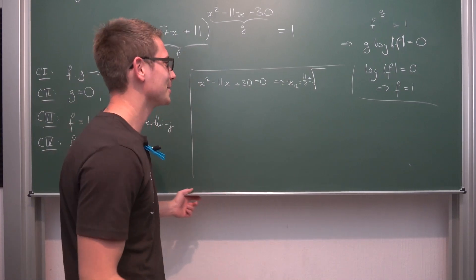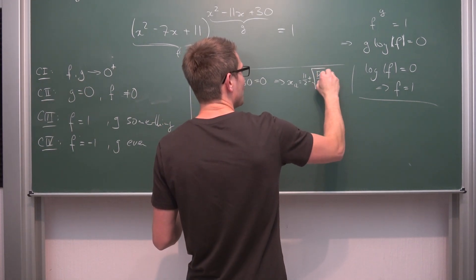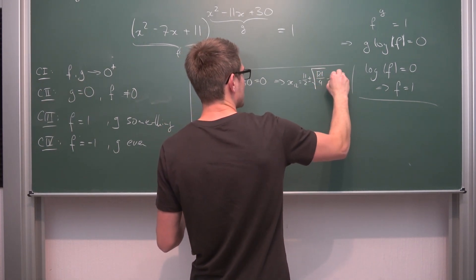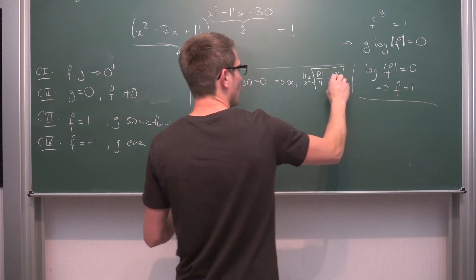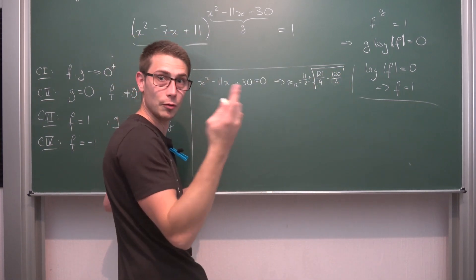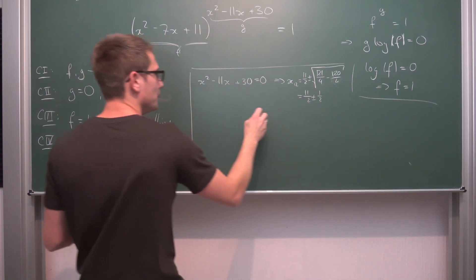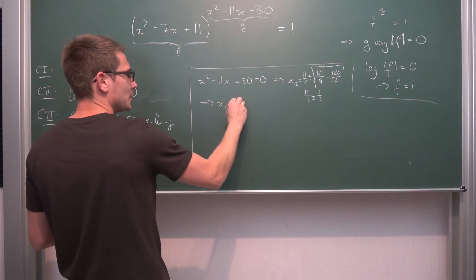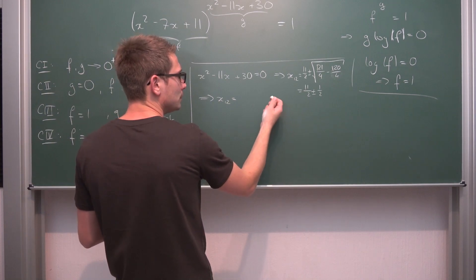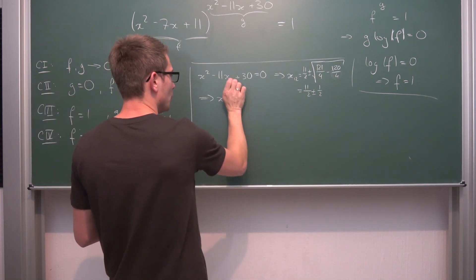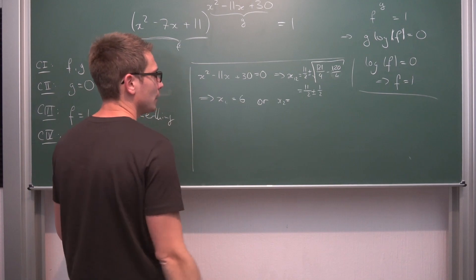So this is just 1/4 and the square root of that is 1/2. So this is 11/2 plus or minus 1/2, meaning overall we're going to get two solutions x₁ and x₂ being equal to, on the one hand 6. First solution is 6, or g can be equal to 0 for the second solution 5.